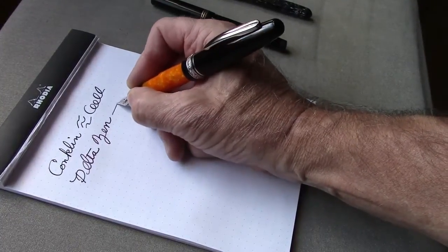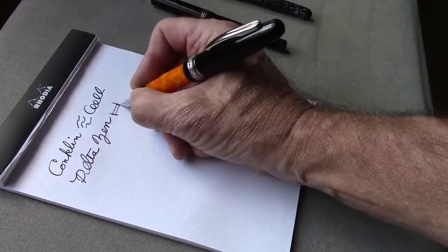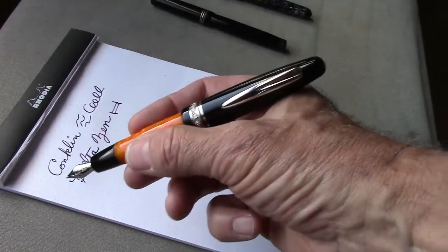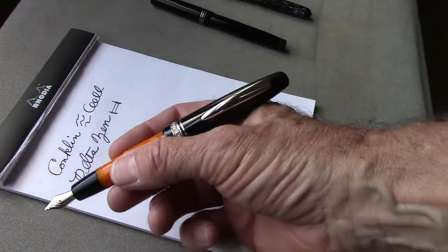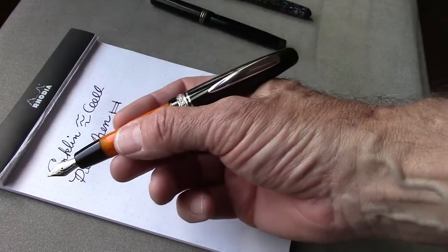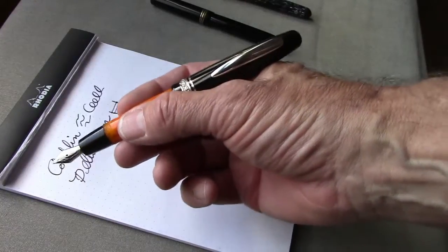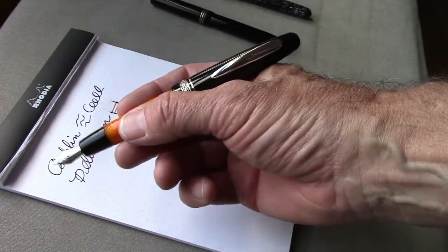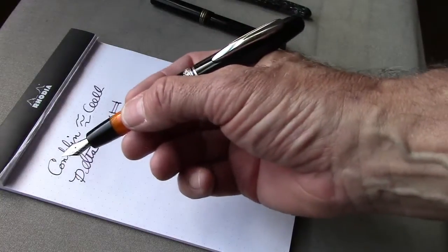Now, I had a little bit of a challenge with this. I first had in Noodler's Black Swan, I think it was Australian Rose, and it would skip a little bit. And after a period of writing, it would stop writing.